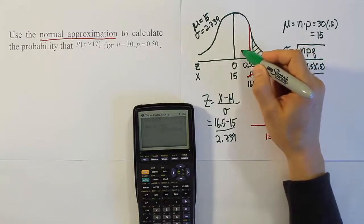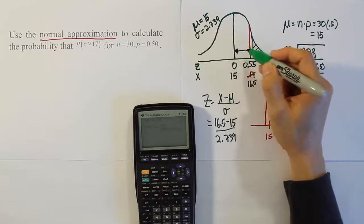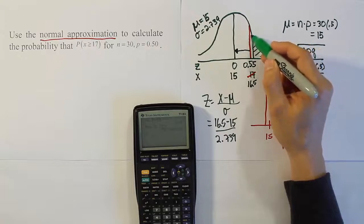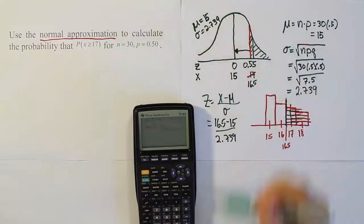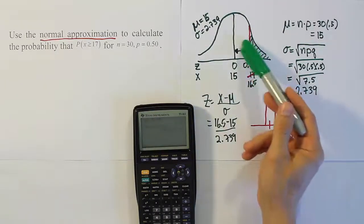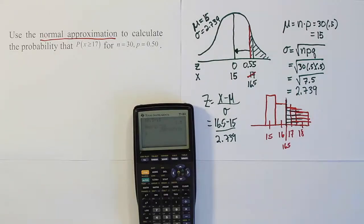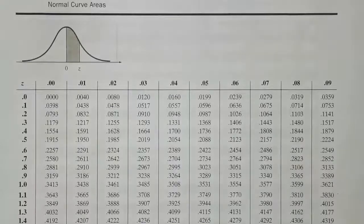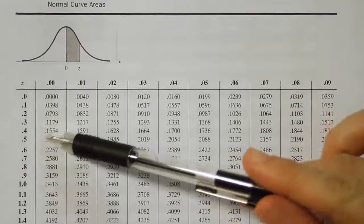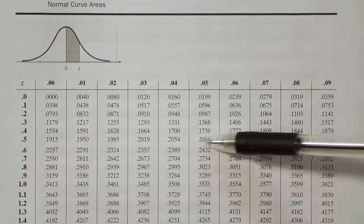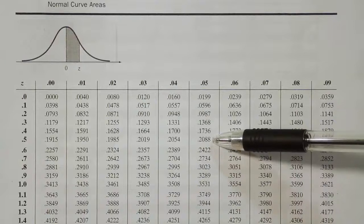When we look that number up, remember, we're going to get from here to here. That's not the number we want. So we'll have to do 1 minus, or we'll do 0.5 minus that answer to get our final solution. Let's first go to the z-table and look up 0.55 to get the area from here to here. Okay, so we're looking up 0.55 on the z-table. There's 0.5, and over to where it says 5 here is 0.2088.